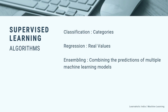Supervised learning uses labeled training data to learn the mapping function that turns input variable x into the output variable y. In other words, it solves for function f the equation y = f(x). This allows us to accurately generate outputs when given new inputs. There are three types of supervised learning: classification, regression, and ensembling.